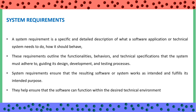Now we will see what are system requirements. A system requirement is a specific and detailed description of what a software application or technical system needs to do and how it should behave. These requirements outline the functionalities, behaviors, and technical specifications that the system must adhere to, guiding its design, development, and testing processes.